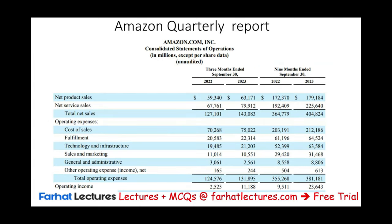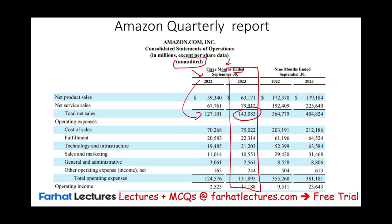The best way to illustrate this is to look at an actual report — we're going to look at Amazon. Notice these are unaudited financial statements. It shows the three-month ended September 30th — the most recent quarter of 2023, with sales of $143 billion — compared to the same quarter of 2022, which was $127 billion. They also show the nine-month ended, January 1st to September 30th, with revenue of $404 billion, of which $143 billion is from the most recent quarter. They show the same for September 2022.